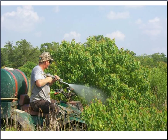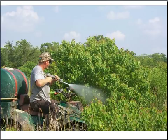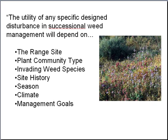Design disturbances include activities initiated to create or eliminate site availability and are aimed at initiating and controlling succession. Weed management strategies have included design disturbance such as cultivation, burning, and herbicide applications for decades. However, in successional management, design disturbance is used to alter successional trajectories and minimize the need for continuous high energy inputs. The utility of any specific design disturbance will depend on the range site, plant community type, invading weed species, site history, season, climate, and management goals.